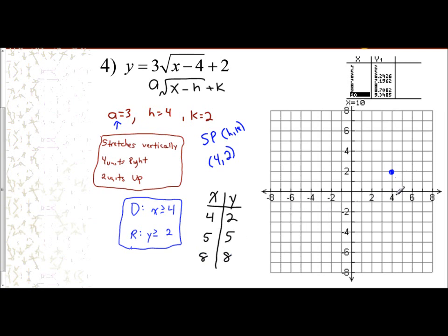So I'm going to plot those points. At 5, I'm at 5. At 8, I'm at 8. Now remember, this is your starting point, so you don't go beyond this. You start here and you connect with a curve through the rest of the points. And there's your graph.